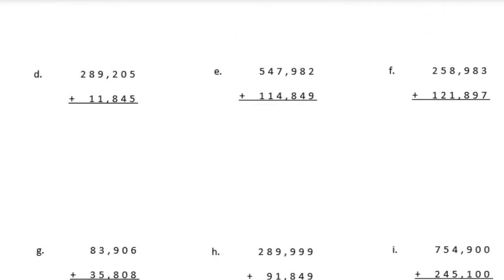Problem D: 289,205 plus 11,845. 5 plus 5 is 10 — carry the 1; 1 plus 0 plus 4 is 5; 2 plus 8 is 10 — carry the 1; 1 plus 9 plus 1 is 11 — carry the 1; 1 plus 8 plus 1 is 10 — carry the 1; 1 plus 2 is 3. We get 301,050.